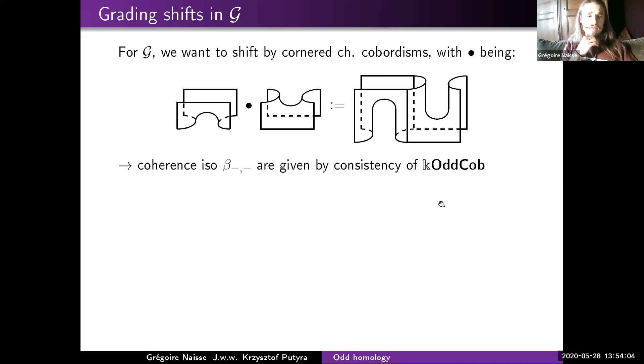That concludes the main content of the talk, apologizing for running over time. In the Q&A, a message from Chris noted a possible issue with the graded isomorphism. The speaker also addressed whether the 3-cocycle can be viewed as an element of H^3 of the classifying space of the category with coefficients in k*, and whether it has a topological interpretation — possibly related to some three-manifold inside or mapped to the classifying space.